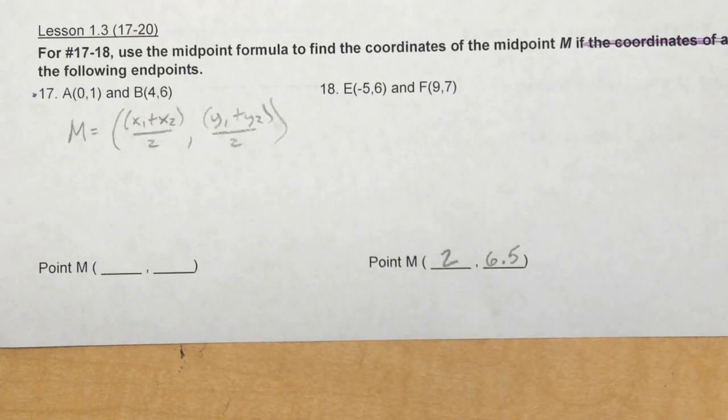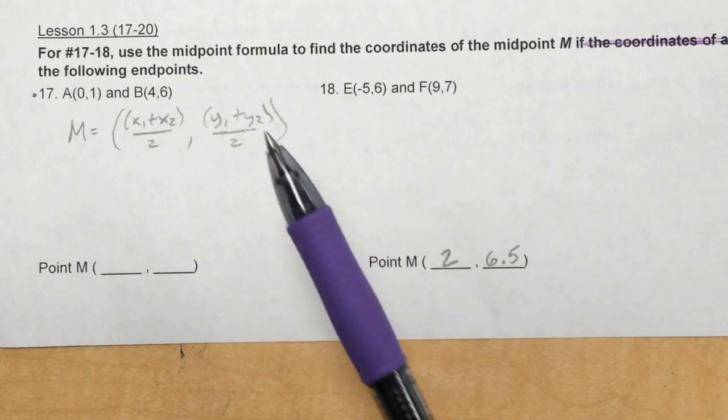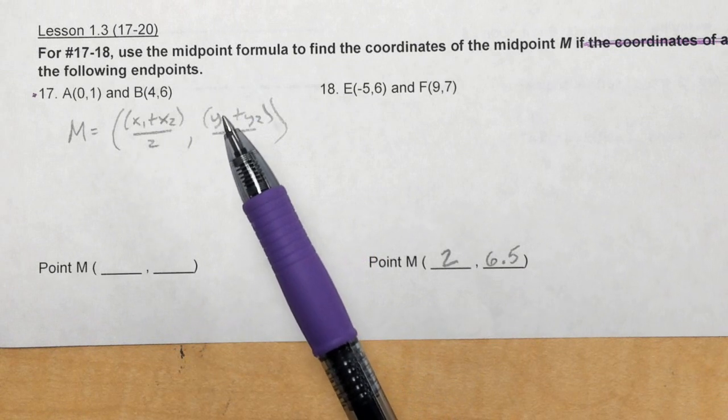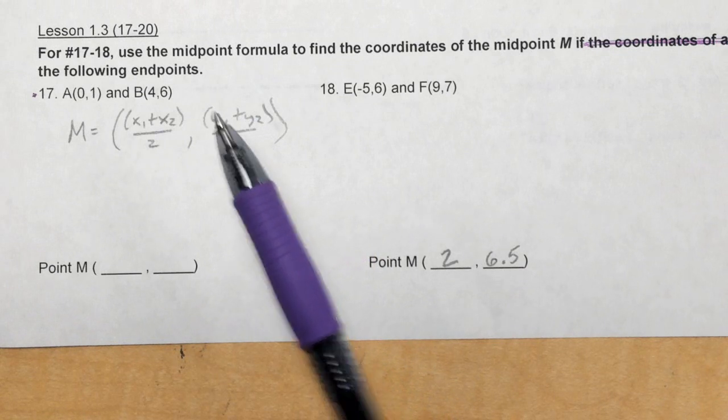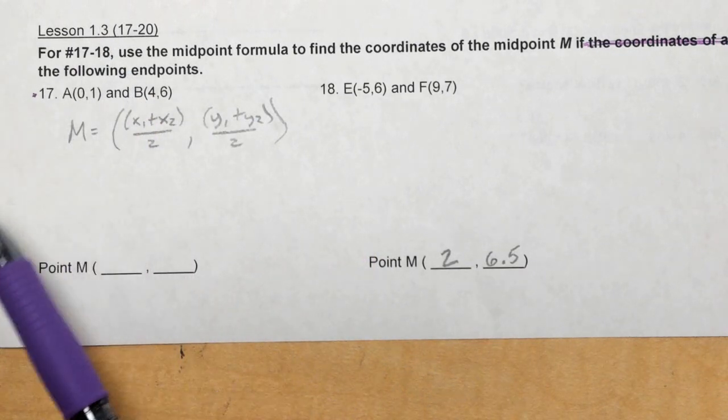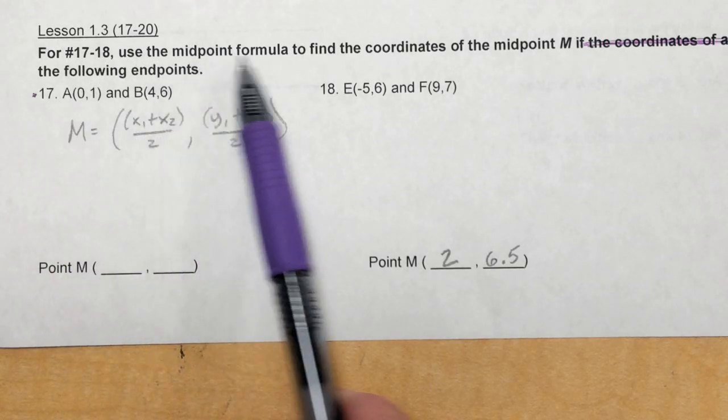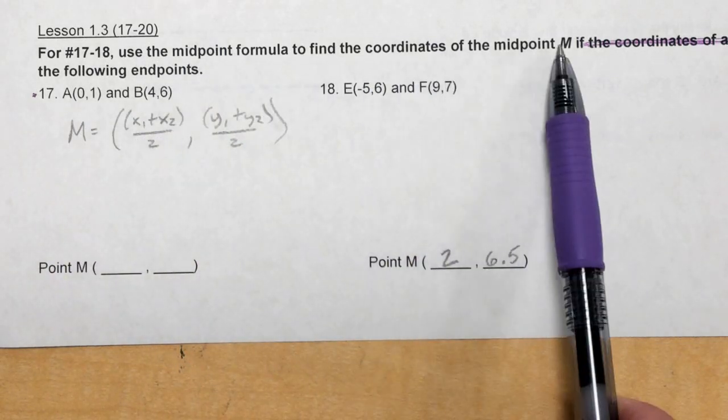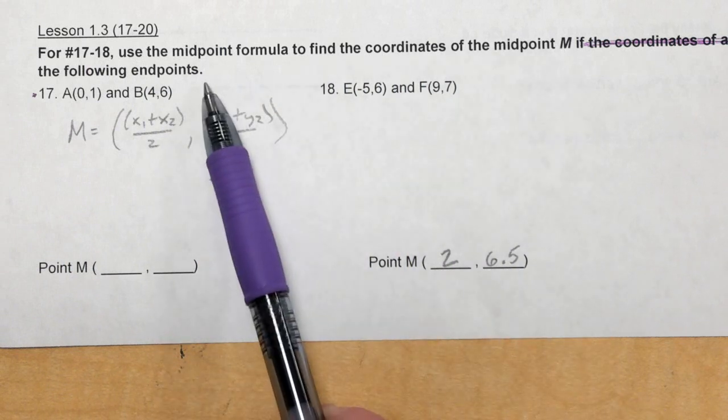Hi everybody, how you doing? This is Mr. Douse. This is my second video going over various problems on the unit one review. So this first one I'm going to start off with 17. It says for 17 and 18 use the midpoint formula to find the coordinates of the midpoint M using the following endpoints.